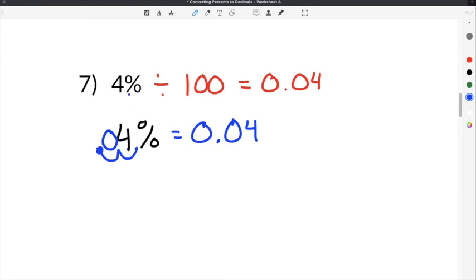You will notice that once 4% has been converted to a decimal, you will get 0.04 regardless of which way that you complete it.